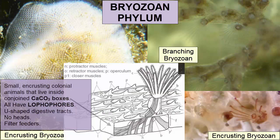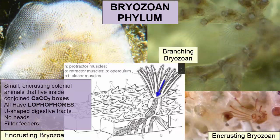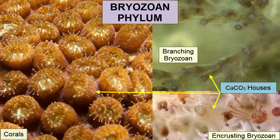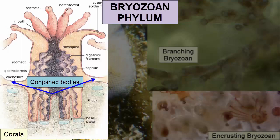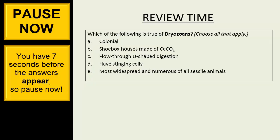The Bryozoa phylum contains the most widespread and numerous sessile marine animals. They are small, encrusting, colonial animals that live inside conjoined calcite boxes. All bryozoans have lophophores — a circular structure spirally wound and lined with ciliated tentacles — U-shaped digestive tracts, no heads, and are filter feeders. From the outside, bryozoans look like corals, but they are far more advanced, have no stinging cells, and their individual zooids are not conjoined as coral polyps are.